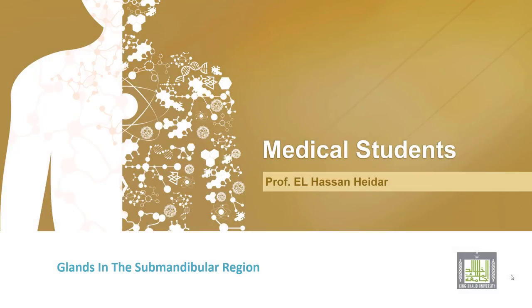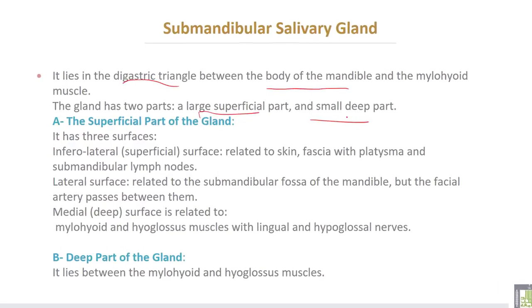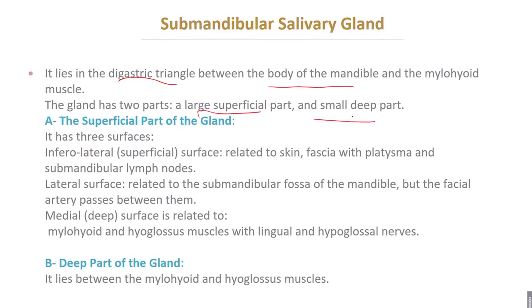Glands in the sub-mandibular region, starting with the sub-mandibular salivary gland. The sub-mandibular salivary gland lies in the digastric triangle between the body of the mandible and the mylohyoid muscle. The gland has two parts: a large superficial part and a small deep part.